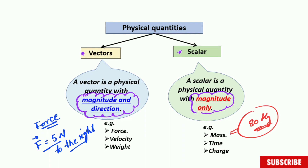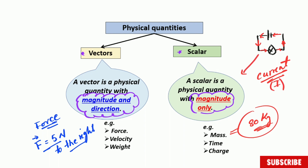Now there are some physical quantities that have a direction and a magnitude but are still scalar quantities. For instance, current. Current is an exception because it has a direction and magnitude. When you speak about current in an electric circuit, you know that current flows from one direction to another. But current is not a vector — it is a scalar quantity. That is one exception.